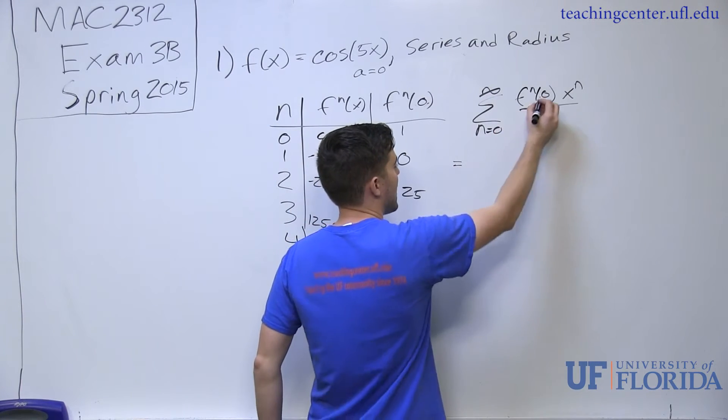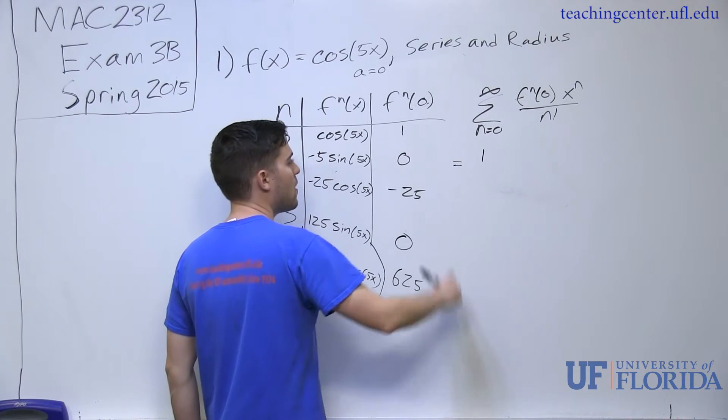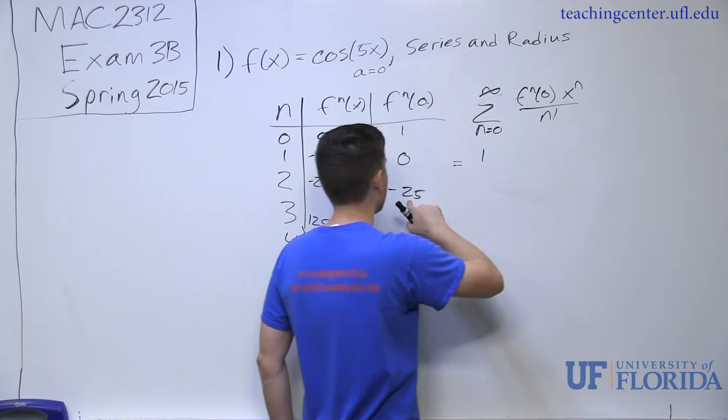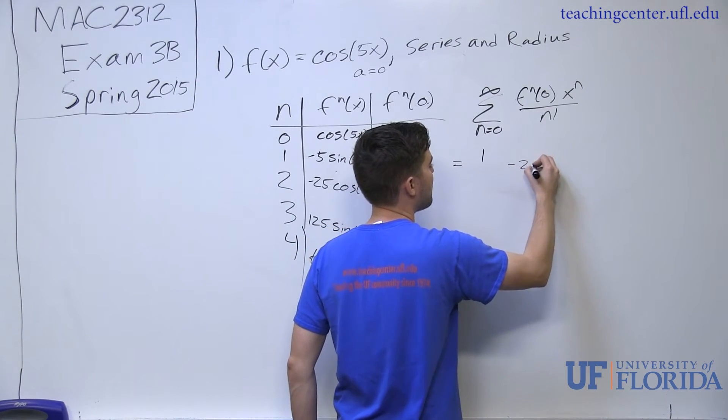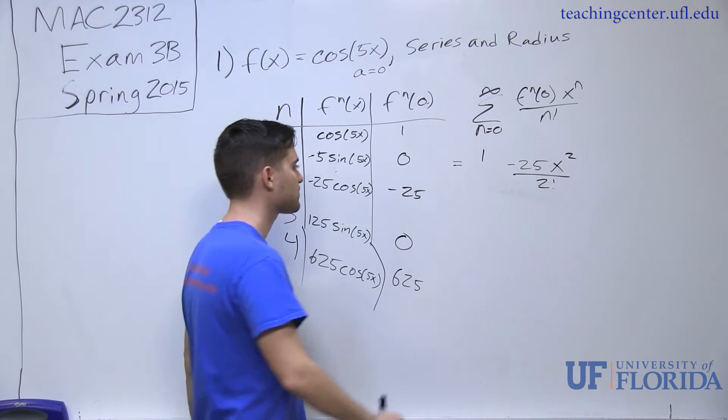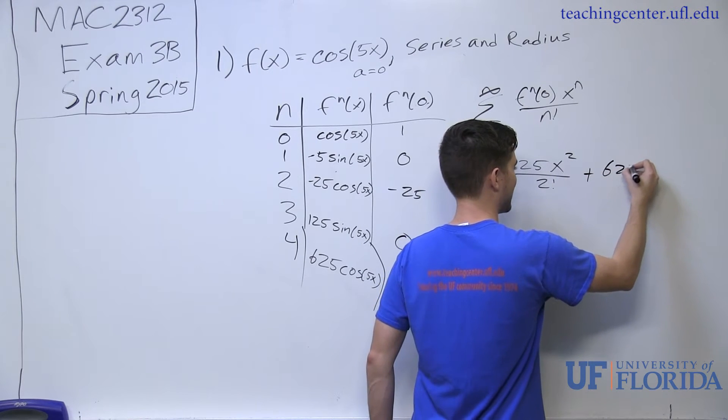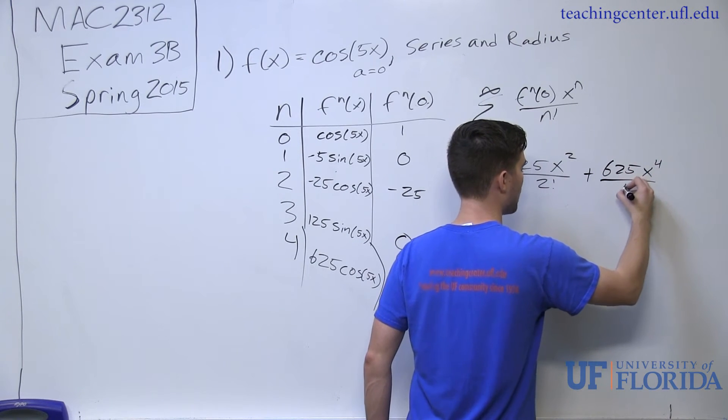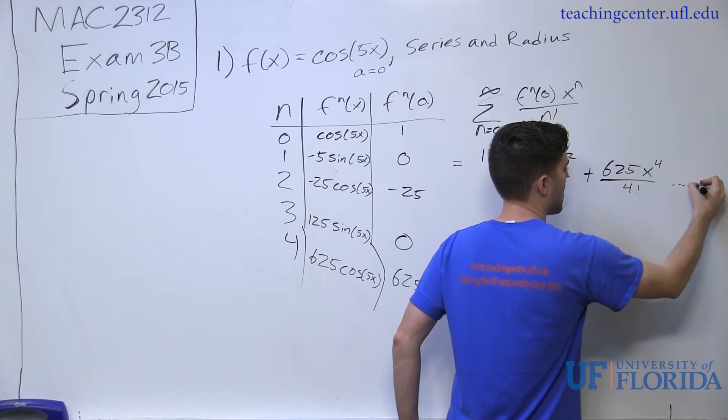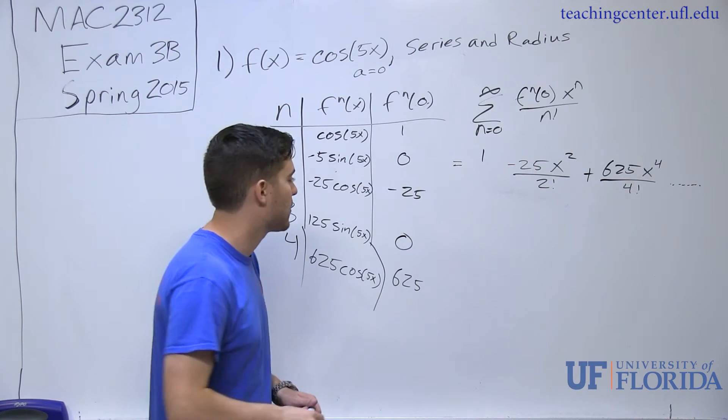My first term in this case is one x to the zero divided by zero factorial. That corresponds to that term right there. My second term would be zero, so I don't include that one. This term would be at n equals two, so I have minus 25x squared divided by two factorial. Third term at n equals three doesn't exist, so I look at my fourth term. My fourth term is 625x to the fourth divided by four factorial. And I also would have a bunch of other terms, but I am not going to expand out fifteen different terms. The three terms should be okay to try to find the pattern.